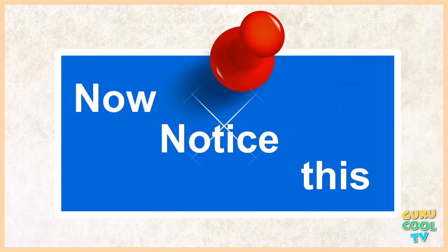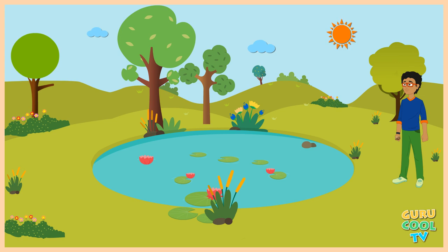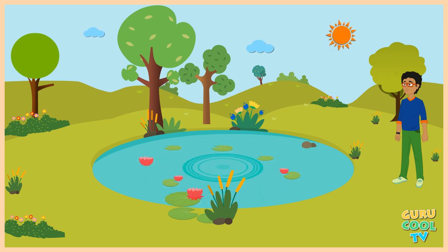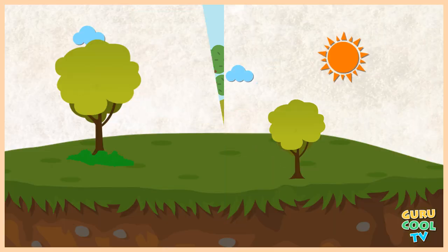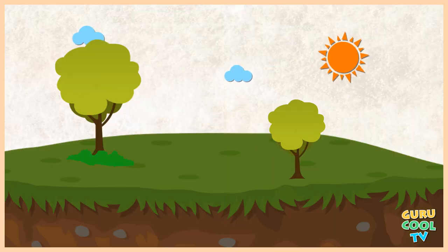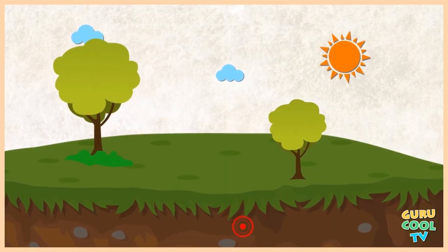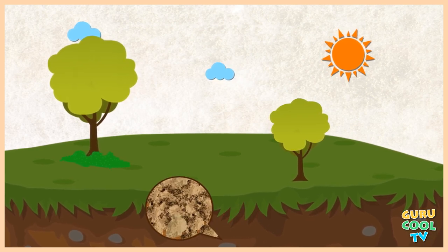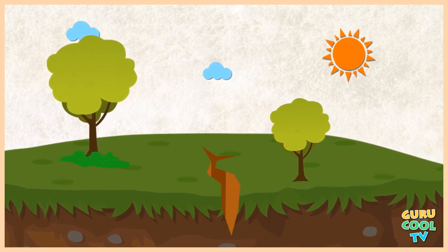Now notice this. I throw a stone into a pond. From the point where the stone fell, waves spread through the water in all directions. In the same way, movements like waves are set up in the ground if some rocks in the earth are somehow disturbed.